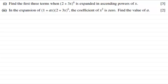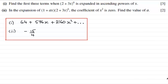Okay, welcome back then if you had a go. Well, the numerical answers to parts 1 and 2 then are 64 + 576x + 2160x². And then in part 2 it's minus 15 over 4, or you could say minus 3.75.